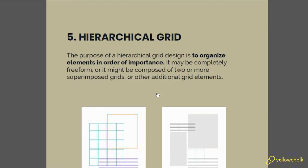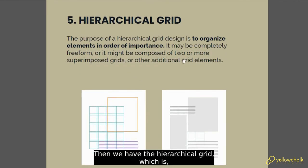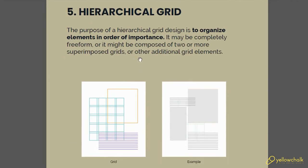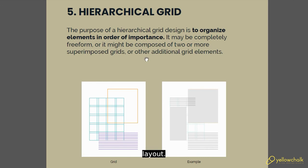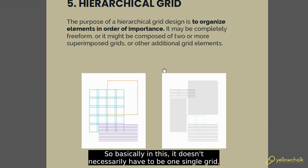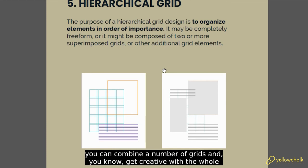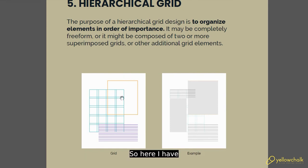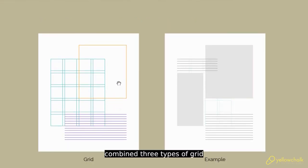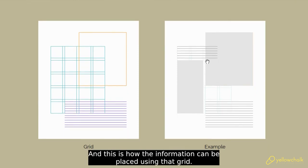Then we have the hierarchical grid, which, as the name suggests, is for maintaining hierarchy in your layout. It doesn't necessarily have to be one single grid — you can combine a number of grids and get creative with the whole process. Here I have combined three types of grid: the modular grid, the manuscript grid, and the baseline grid, and this is how the information can be placed using that combined grid.